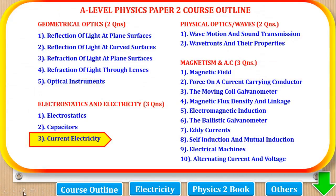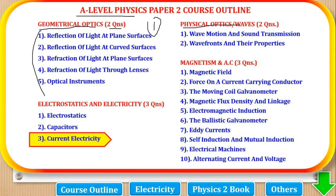Before we proceed, let's first look at the course outline for this paper. Paper 2 is divided into 4 parts. The first part is Geometrical Optics where 2 questions come from these topics and a student must answer 1. The next part is Physical Optics or Waves where 2 questions come and a student must answer 1. The third part is Electrostatics and Electrics where 3 questions come, and the fourth part is Magnetism and AC where 3 questions come from this.